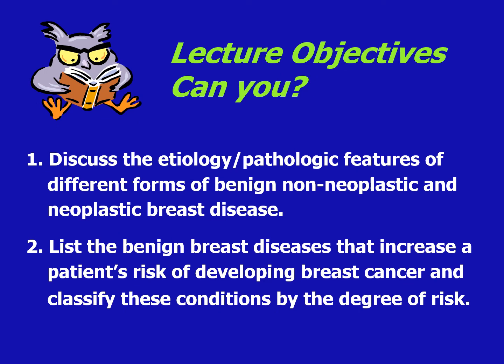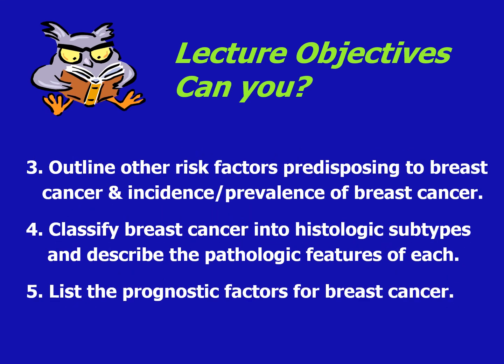Following our lecture objectives, we discussed the etiology and pathologic features of different forms of benign, non-neoplastic, and neoplastic breast diseases. We listed the benign breast diseases that increase a patient's risk of developing breast cancer and classified these conditions by degree of risk. We outlined other risk factors predisposing to breast cancer, classified breast cancer into histologic subtypes, and listed the prognostic factors for breast cancer. Thank you for listening to our Diseases of the Breast lecture. Please subscribe to my channel for more lectures on Obstetrics and Gynecology.